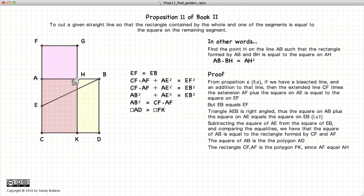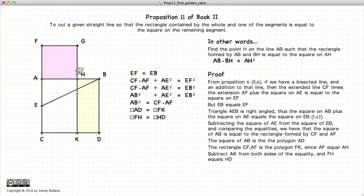In which case, we can subtract off the rectangle AK from both sides of this equality to end up with FH equal to AF squared. We constructed it that way.